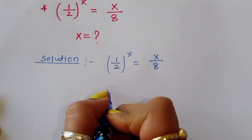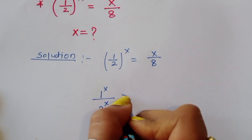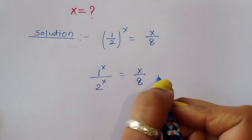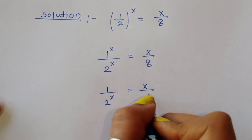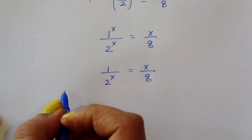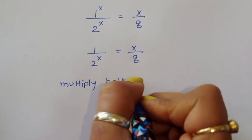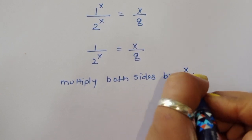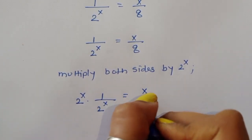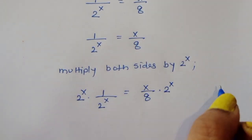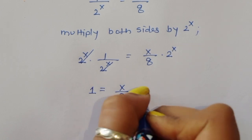We can write this as 1 upon x divided by 2 power x — we are separating the power here — so 1 upon 2 power x is equal to x upon 8. Now multiply both sides by 2 power x. Then 2 power x times 1 upon 2 power x equals x upon 8 times 2 power x. The 2 power x cancels, giving us 1 equals x upon 8 times 2 power x.